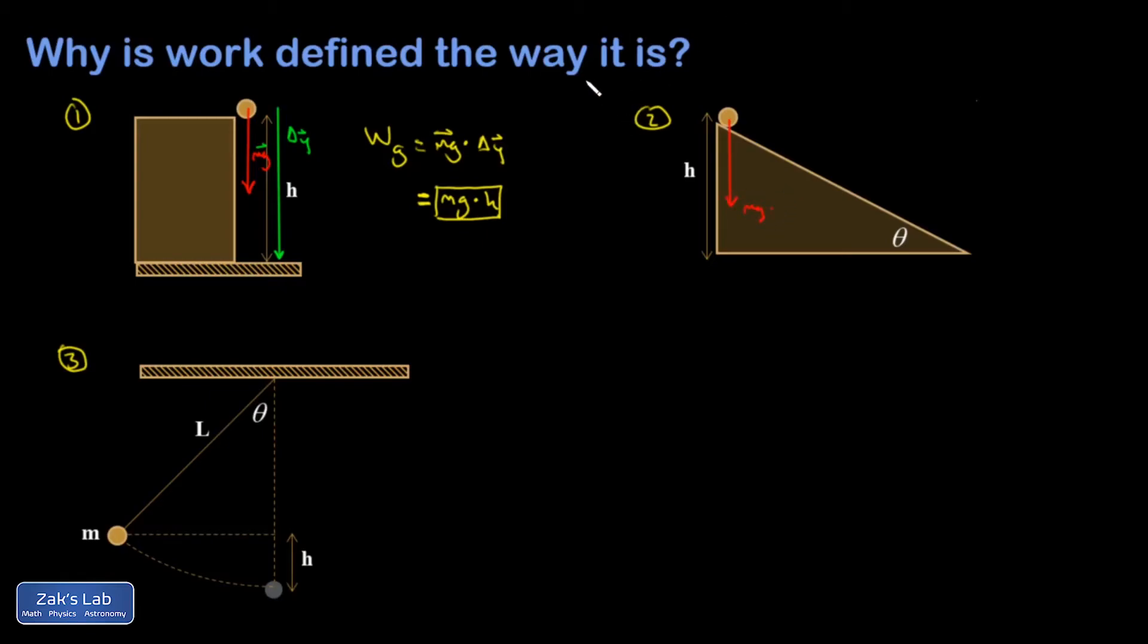And I know that a component of that is moving in the direction of motion. So if we take the component in the direction of motion, that's what we're going to use for getting our work. And that component that points in the direction of motion is going to be an mg sine theta.